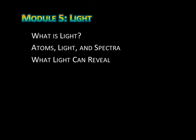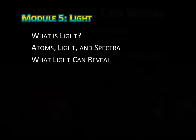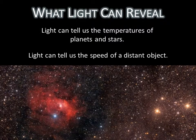This is the final lecture from the light chapter. We just learned how emission and absorption line spectra allow us to determine the chemical composition of astronomical objects. Now we're going to see how light can tell us the temperatures of planets and stars, and how light can tell us the speed of a distant object.